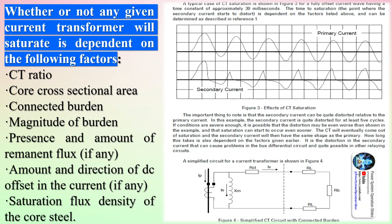An ideal differential relaying system takes advantage of the fact that the sum of the currents will be zero for external faults or load flow, whereas the sum will be equal to the total fault current for internal faults. Unfortunately, there are problems introduced wherein the ideal cannot always be obtained, and steps must be taken to ensure that the differential relaying system works properly even under non-ideal conditions.